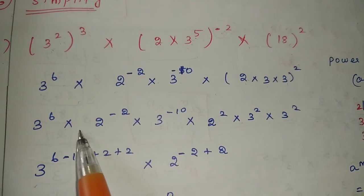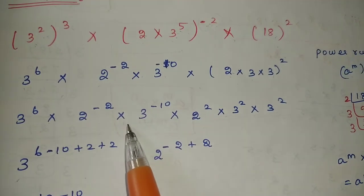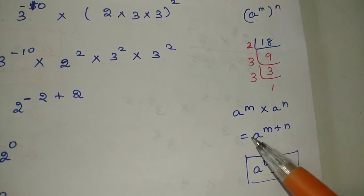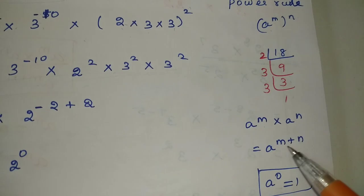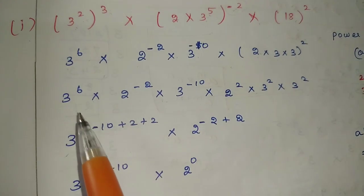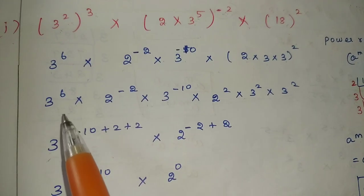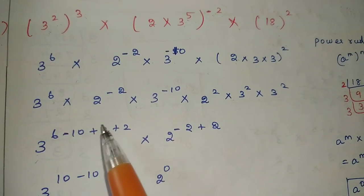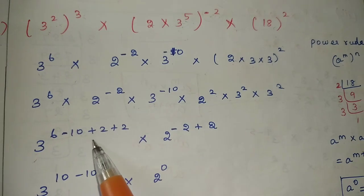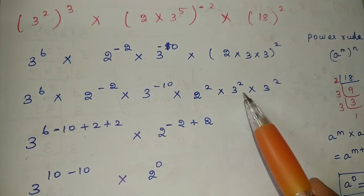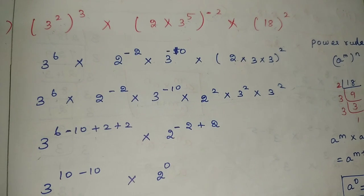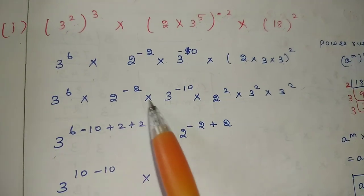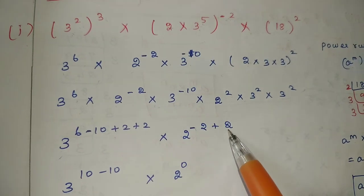Here we will talk about the rule: a power n into a power m is equal to a power m plus n — the product rule. All same base: base 3 is power 6 minus 10, next plus 2. For base 2: 2 power minus 2 plus 2.